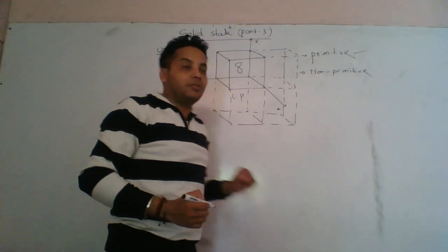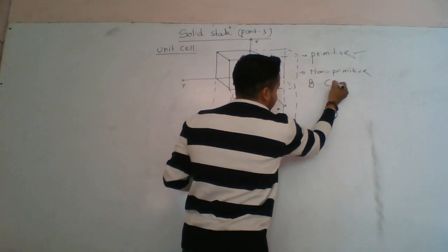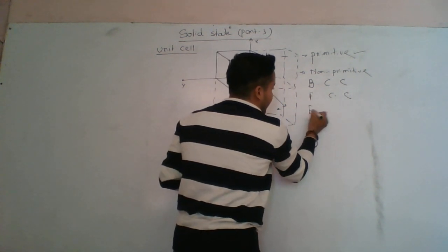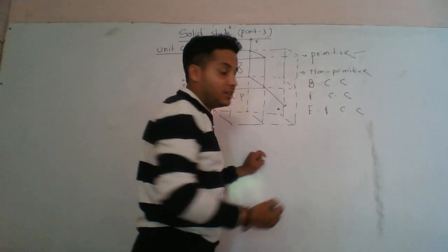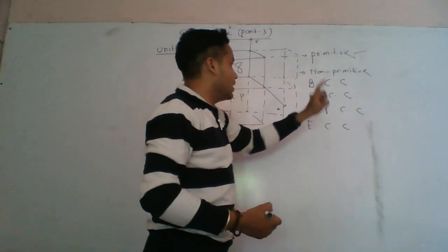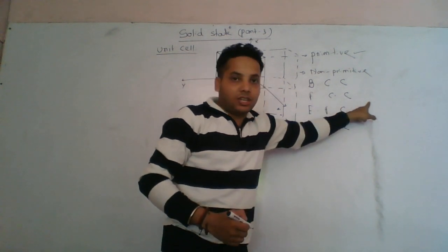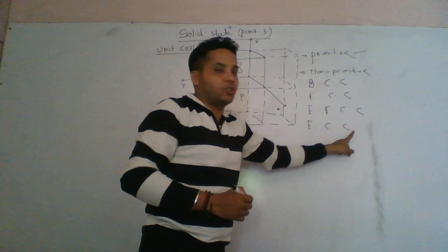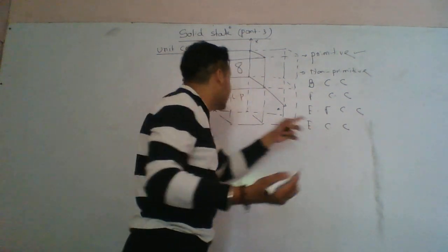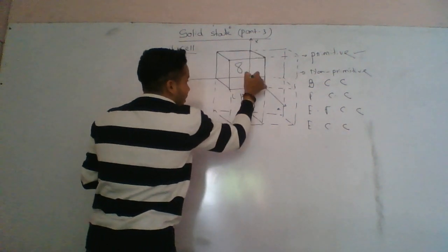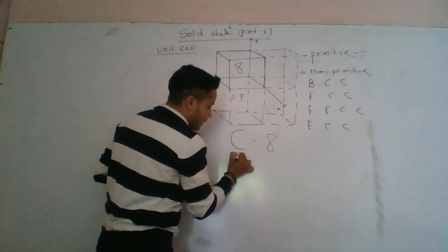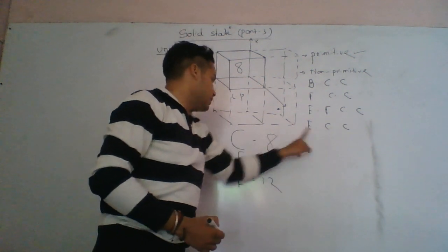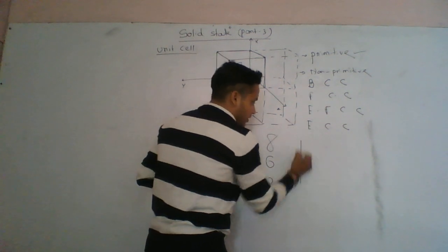The non-primitive cell is body center cubic, BCC body center cubic, face center cubic FCC, and end face center cubic by FCC.